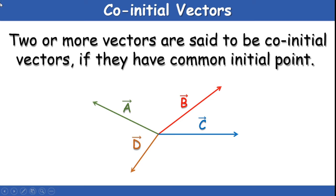Co-initial vectors: if two or more vectors have the same initial point — a common tail — then we call them co-initial vectors. They are all starting from the same initial point. In the example, vectors A, B, C, and D are all starting from a common initial point; hence these four vectors are called co-initial vectors.